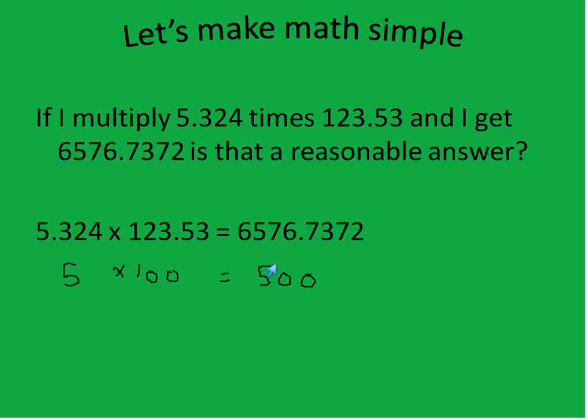We can kind of tone things down and say, is this anywhere near being right? And in this case, absolutely not. Not a reasonable answer. Our answer should be much less than that. In this case, I did just misplace the decimal by 1. So when we double check, we'll get the correct answer.